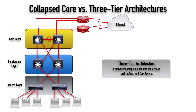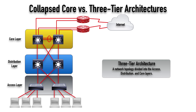Some literature calls the distribution layer a building distribution layer, because on a campus where we have multiple office buildings in close proximity, we might have a building distribution layer in every building. But then we want to interconnect the buildings — we could do that up at the core layer. The job of the core layer is to get traffic as quickly as possible from one distribution layer switch to another, moving packets as fast as possible. The core layer is also our gateway out to the rest of the world.